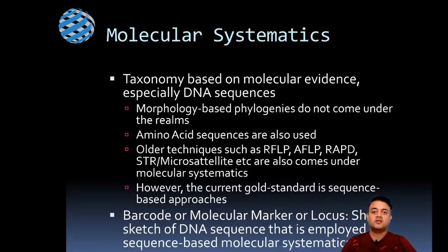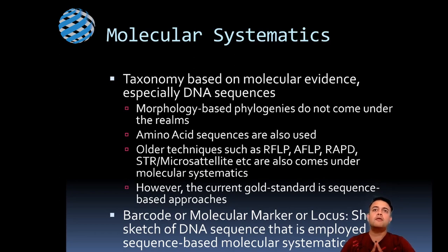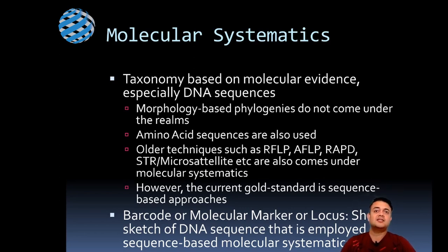Molecular systematics, as the name says, is systematics based upon molecular evidences — usually DNA sequences, but it can also include protein or amino acid sequences. Morphology-based phylogenies do not come under the realm of molecular systematics, though morphology can be used to augment molecular evidence. Older techniques like RFLP, AFLP, RAPD, STR, and microsatellites also fall under molecular systematics because ultimately these are all molecules.